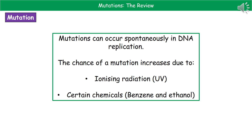When thinking about when these mutations can occur, the answer is anytime. Sometimes when your DNA is replicating, it occurs as an error in DNA replication. But your chance of a mutation will increase if you're exposed to doses of ionizing radiation — one of the best examples being ultraviolet (UV) — or if you're exposed to certain chemicals, things like benzene and ethanol for example.